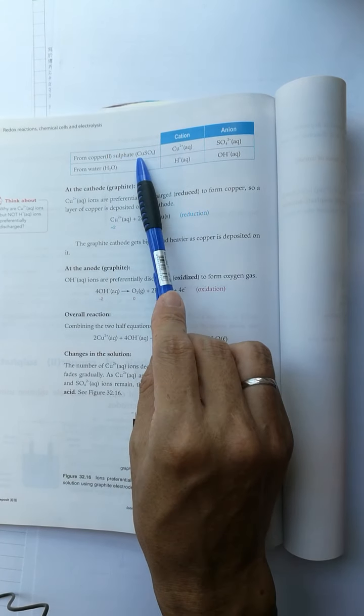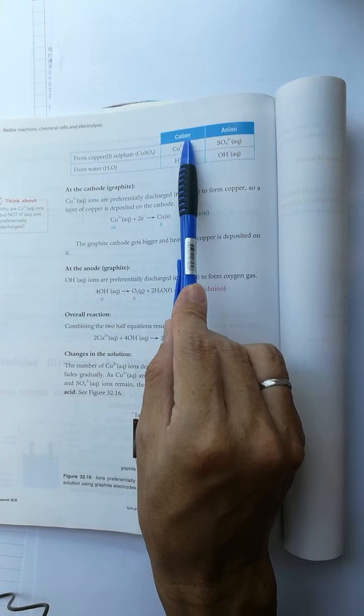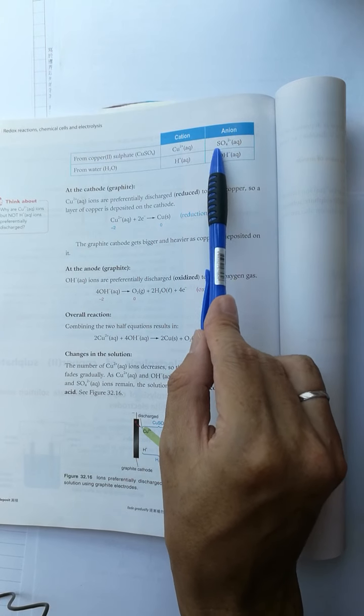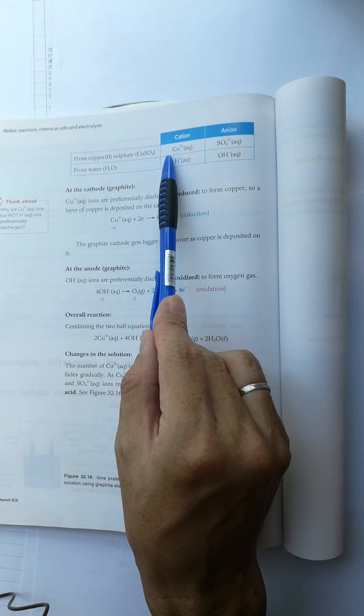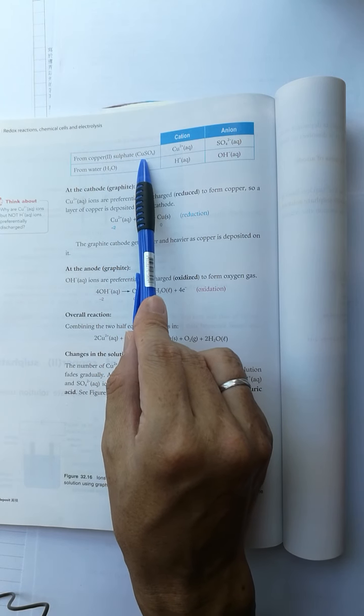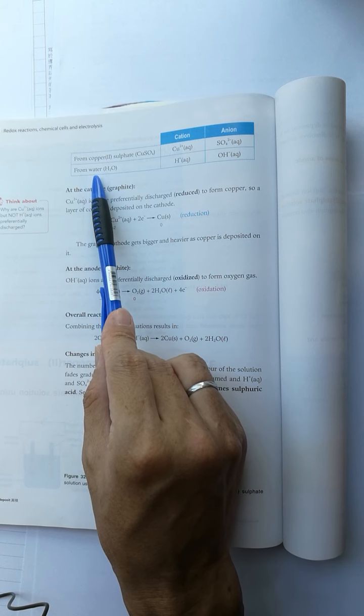Copper(II) sulfate undergoes dissociation into copper(II) ions and sulfate anions that exist in the solution, and water undergoes ionization forming H+ and hydroxide ions.